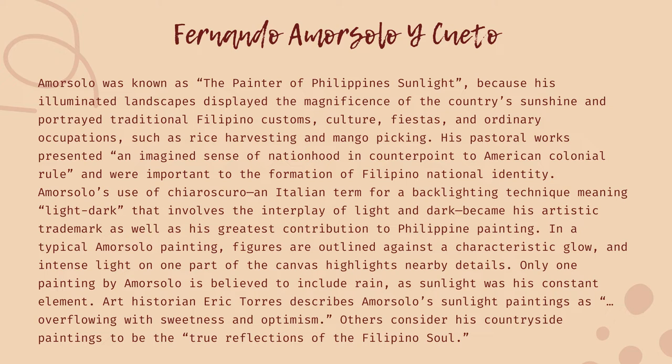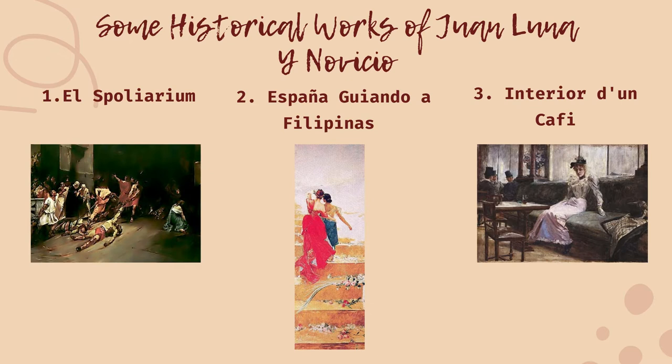Chiaroscuro involves the interplay of light and dark and became his greatest contribution to Philippine painting. In a typical Amorsolo painting, figures are outlined against a characteristic glow, and an intense light on one part of the canvas highlights nearby details. Only one painting by Amorsolo is believed to include rain, as sunlight was his constant element. Art historian Eric Torres describes Amorsolo's sunlight paintings as overflowing with sweetness and optimism. Others consider his countryside paintings to be the true reflection of the Filipino soul.